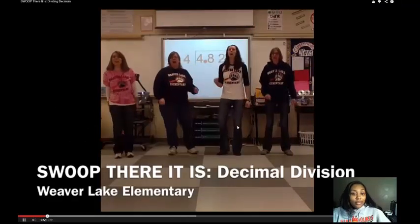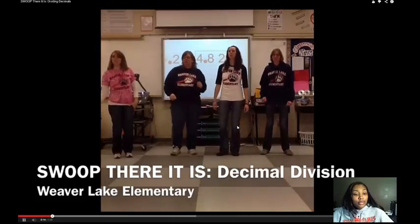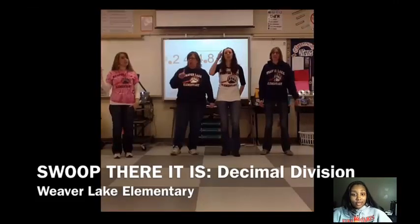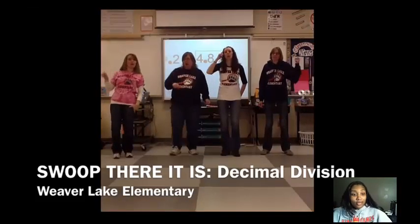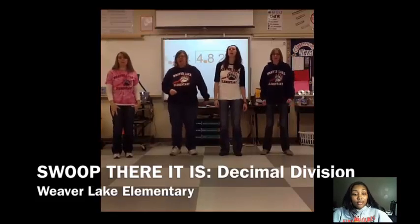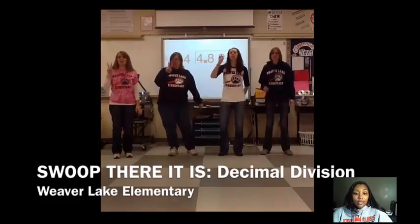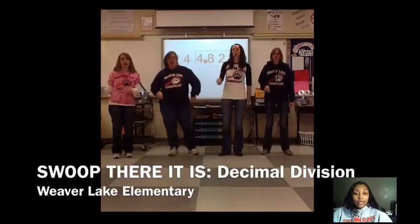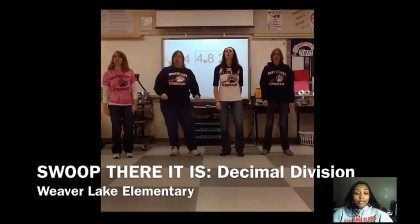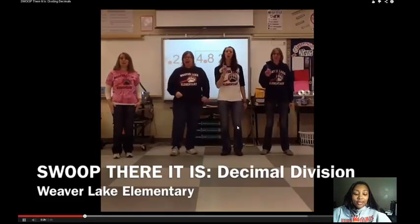If you've got a problem with a decimal divisor, gotta know how to divide it — you're gonna be wiser. First multiply divisors by a power of ten. If it's got two places, gotta swoop it again. Make divisors whole numbers, that's what you gotta do.